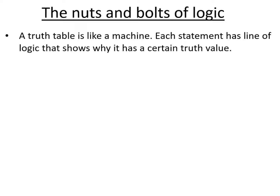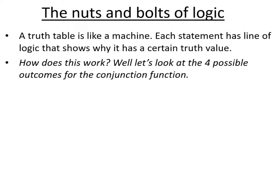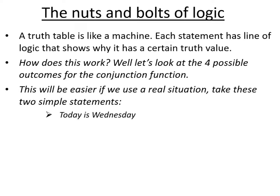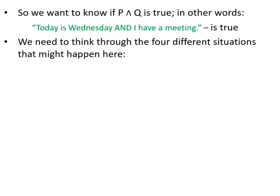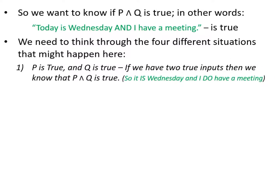We can look at this working by considering the four possible outcomes for the conjunction function with a real-world example. Consider two simple statements: 'today is Wednesday' and 'I have a scout meeting.' We put these into a conjunction P AND Q. The first situation is when P is true and Q is true — if both things are true, then P AND Q is true: it is Wednesday and I do have a scout meeting.